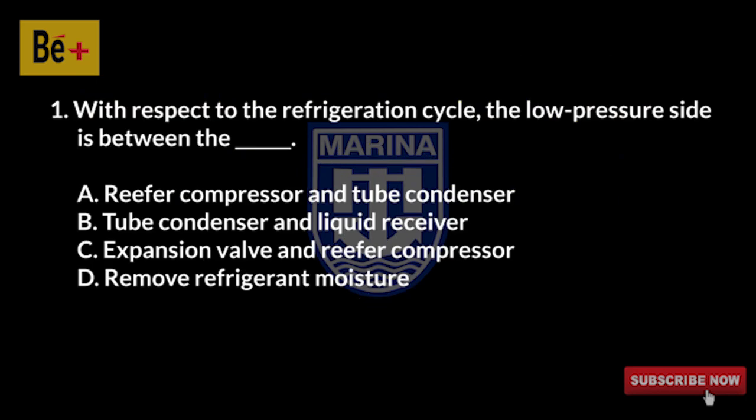With respect to the refrigeration cycle, the low-pressure side is between: A) reefer compressor and tube condenser, B) tube condenser and liquid receiver, C) expansion valve and reefer compressor, D) remove refrigerant moisture. The answer is C, expansion valve and reefer compressor.